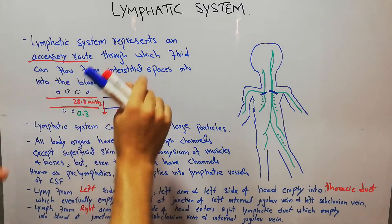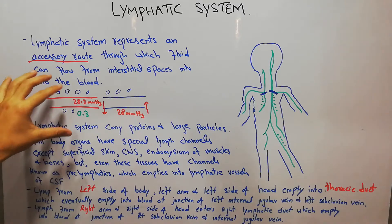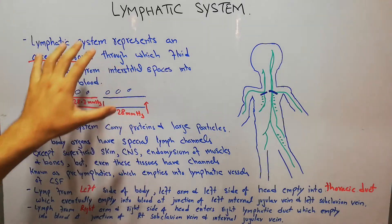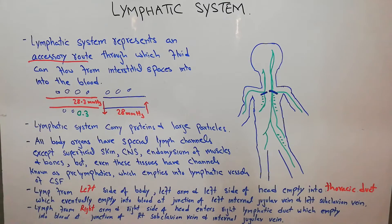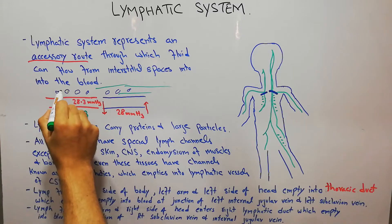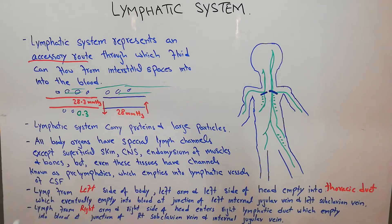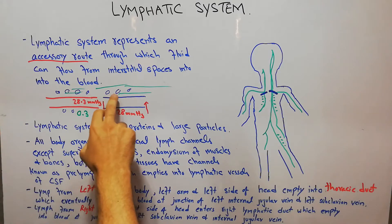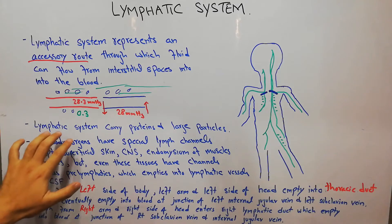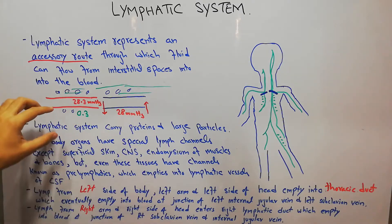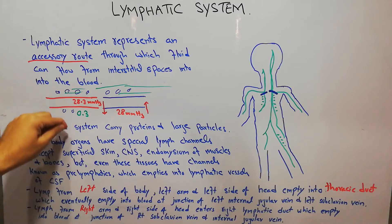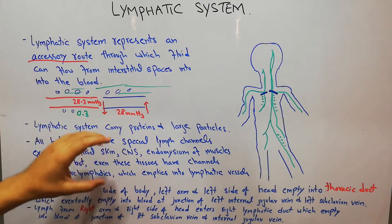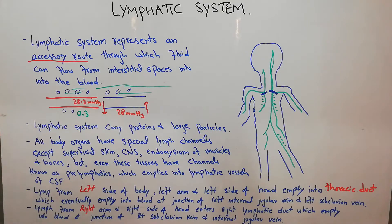To compensate for this extra pressure and for the molecules which cannot be absorbed back into the capillary, there is an alternative and accessory route known as the lymphatic system. The lymphatic system consists of vessels present in the interstitium. These lymphatic vessels carry large molecules, especially proteins, from the interstitium into the blood. Proteins and large particles that get filtered through the capillary wall and cannot be reabsorbed on the venous side get carried away via lymphatic channels.